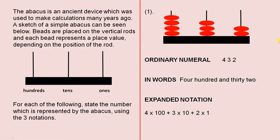The abacus is an ancient device which was used to make calculations many years ago. A sketch of a simple abacus can be seen below. Beads are placed on the vertical rods and each bead represents a place value, depending on the position of the rod.